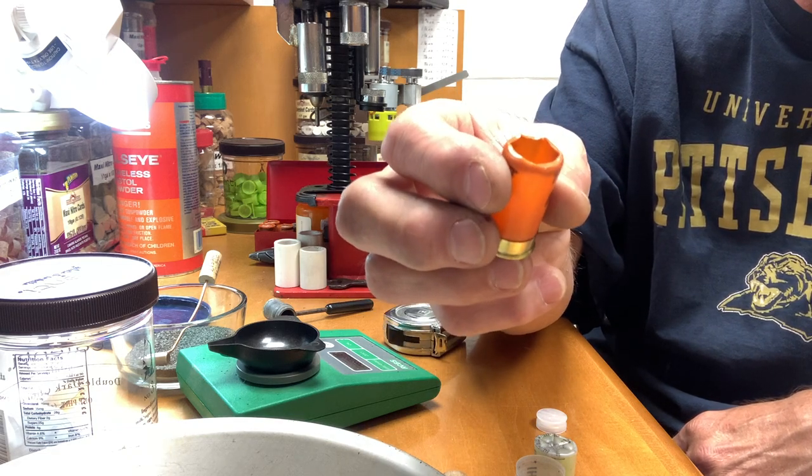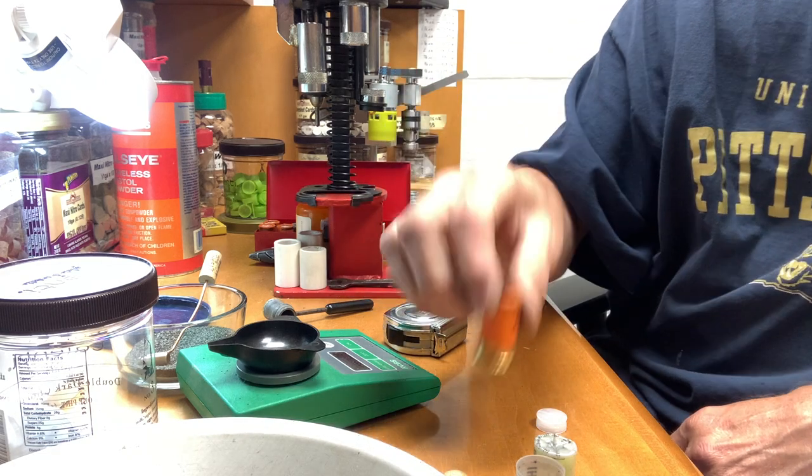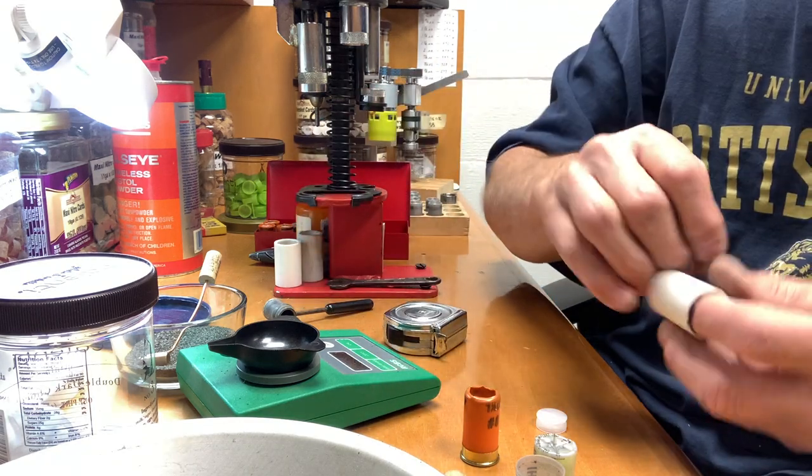But if you're gonna do a mini hull they had to be a lot smaller, they were almost like an inch and a half or less. Hold on, here's my cutting tube for that.